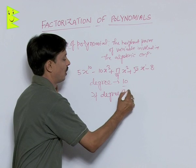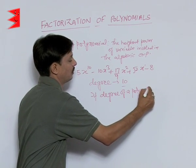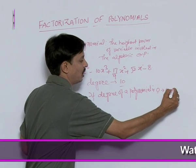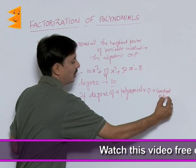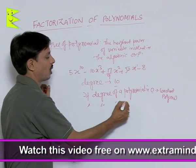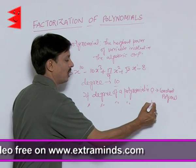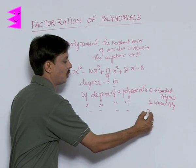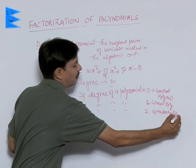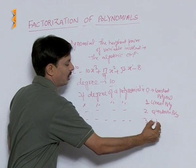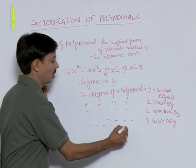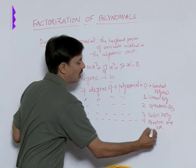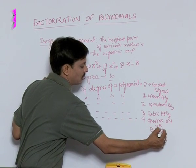To summarize: if the degree of a polynomial is 0, it is a constant polynomial. If the degree is 1, it is a linear polynomial. If the degree is 2, it is a quadratic polynomial. If the degree is 3, it is a cubic polynomial. If the degree is 4, it is a biquadratic polynomial, also known as a quartic polynomial.